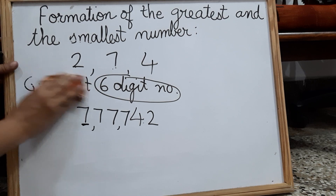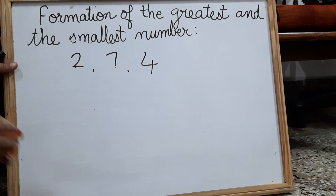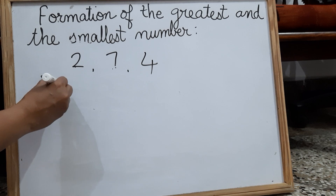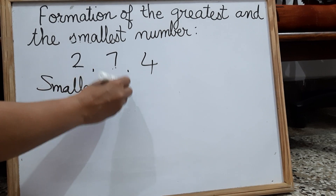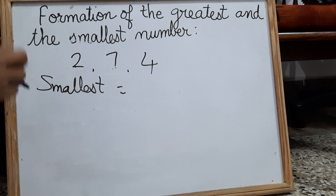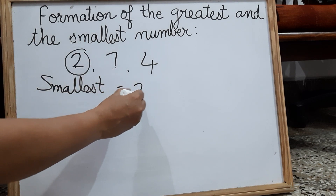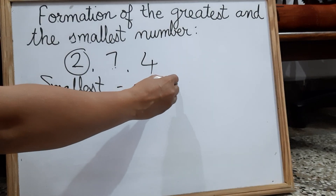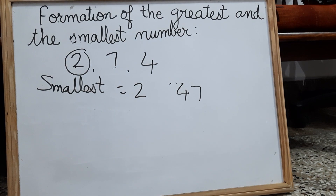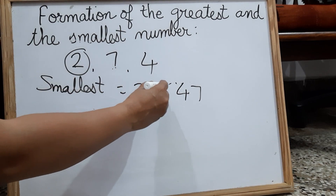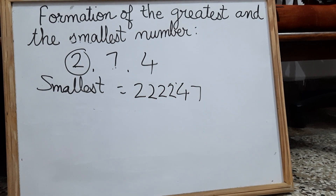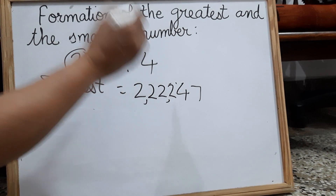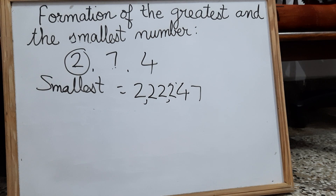How do we write the smallest six digit number using the same digits? Start with the smallest digit, which is two. Go in increasing order: four and seven. It is only three digits, so repeat the smallest digit until you get six digits. It becomes 2,22,247 — the smallest six digit number using digits two, seven, and four.